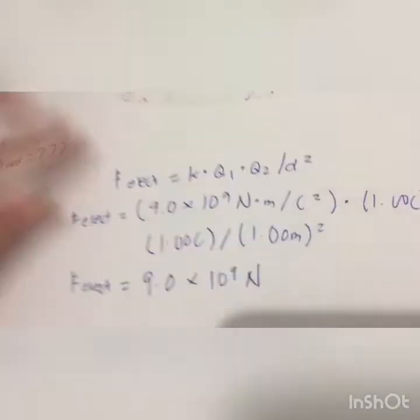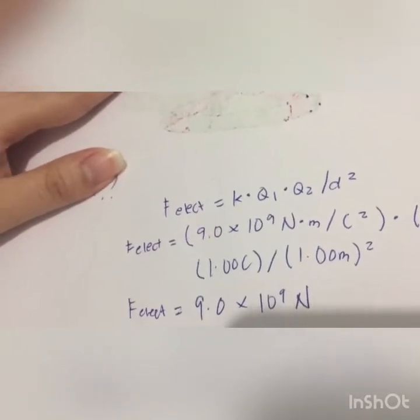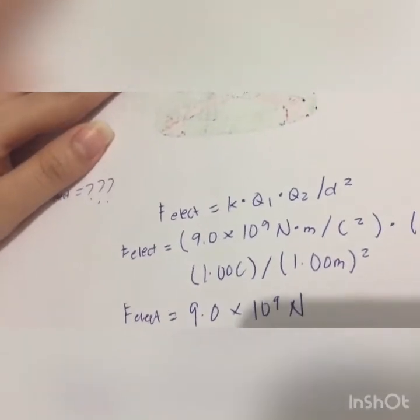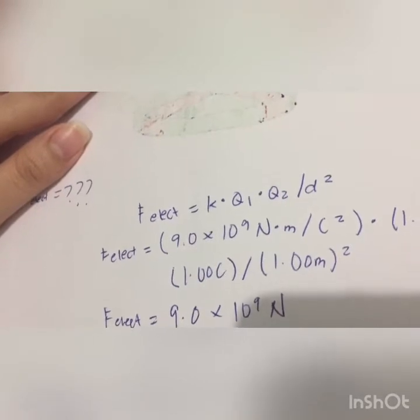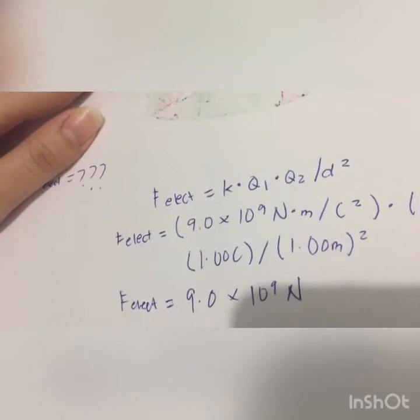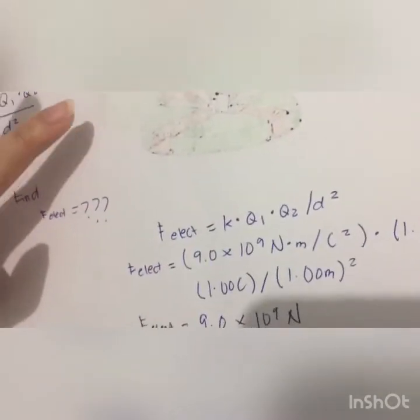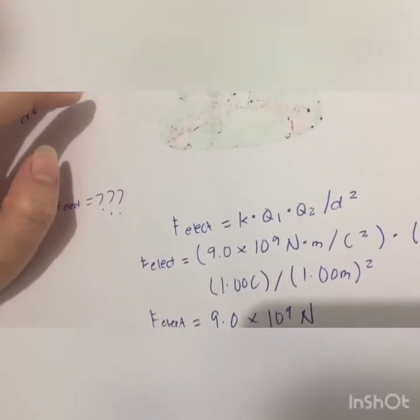This problem illustrates that objects simply do not acquire charges on the order of 1.00 Coulomb. In fact, more likely Q values are on the order of 10⁻⁹ or possibly 10⁻⁶ Coulombs. For this reason, charge is often expressed in units of microcoulombs or nanocoulombs. If a problem states charge in these units, it is advisable to first convert to Coulombs before substituting into Coulomb's Law equation. Note: 1 Coulomb = 10⁶ microcoulombs, and 1 Coulomb = 10⁹ nanocoulombs. The three-step problem-solving strategy is: first, identify and list known information in variable form; second, list the unknown or desired information in variable form; third, substitute known values into Coulomb's Law equation and use proper algebra to solve for the unknown.